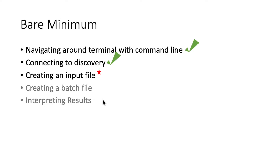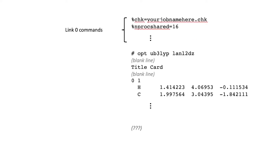If you've ever run a Gaussian job, probably through GaussView, you've created an input file before. But the input file itself is actually a pretty simple text file and it can be easily manipulated by yourself to get the exact job that you want. Here I have just an example input file, either a .com or .gjf.